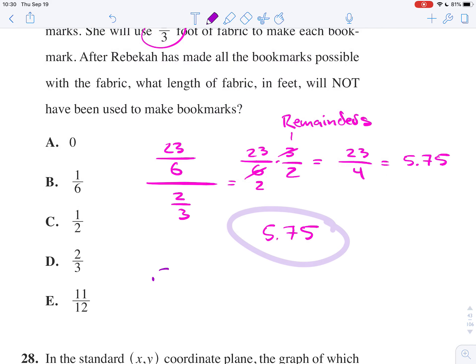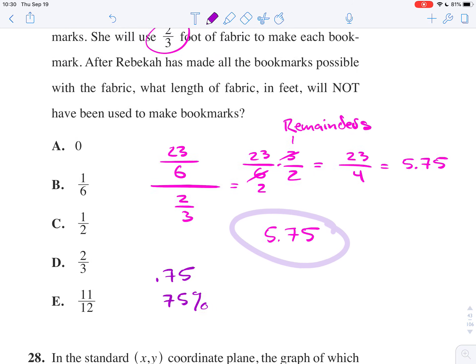What is 0.75 as a percentage? 0.75 is effectively 75%, right? So, she can make 5 whole bookmarks, and then she can make 75% of another bookmark.